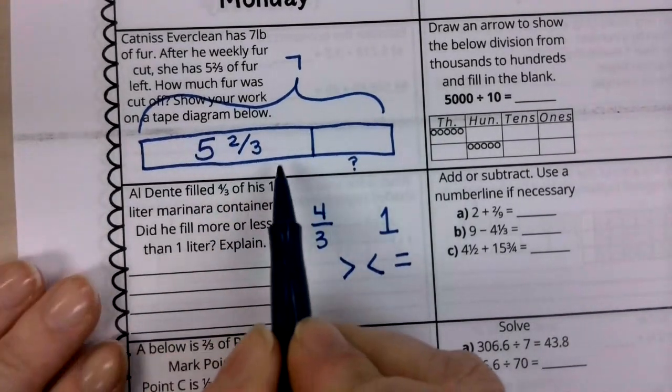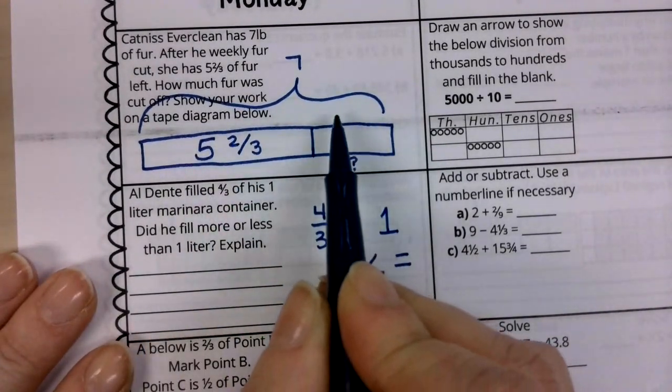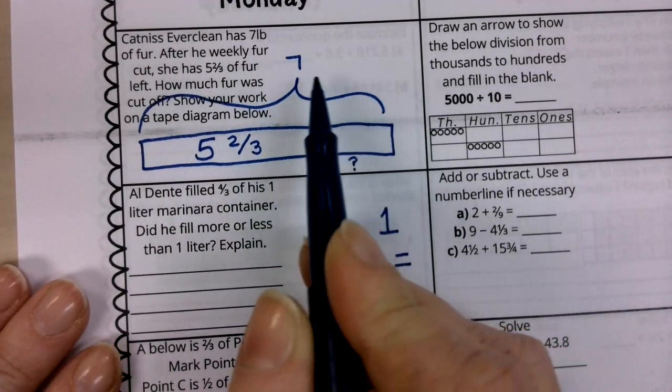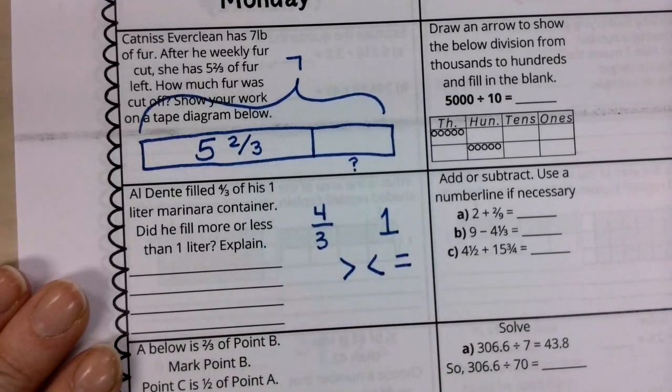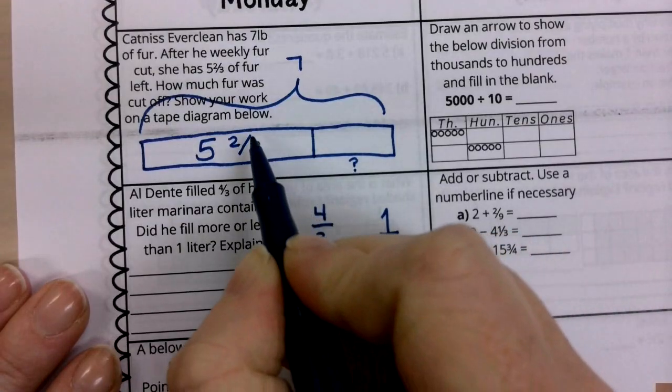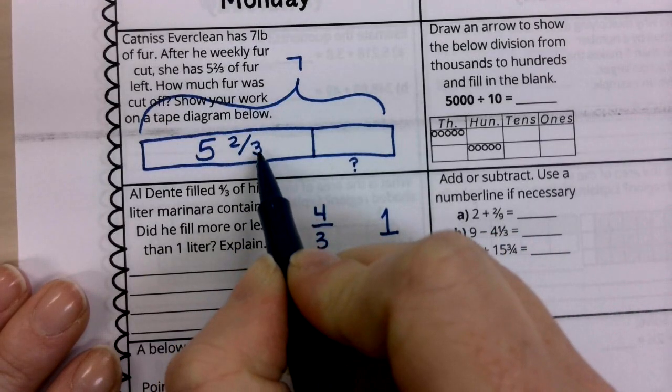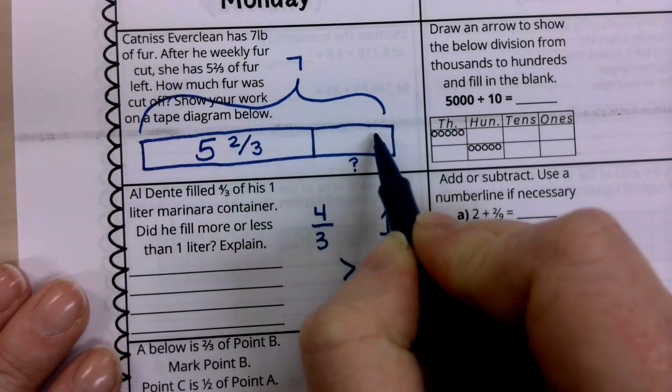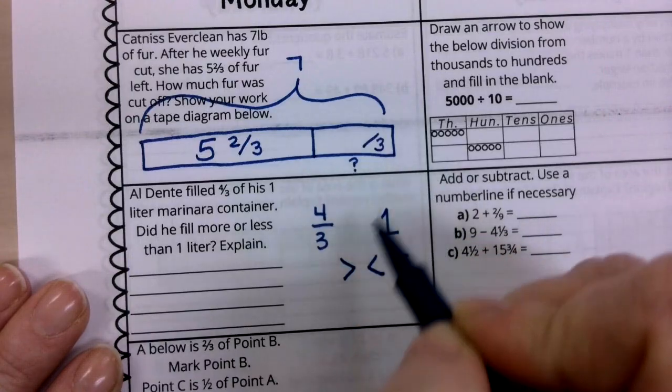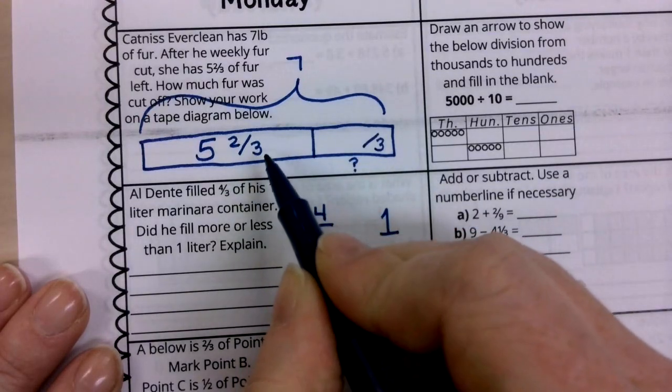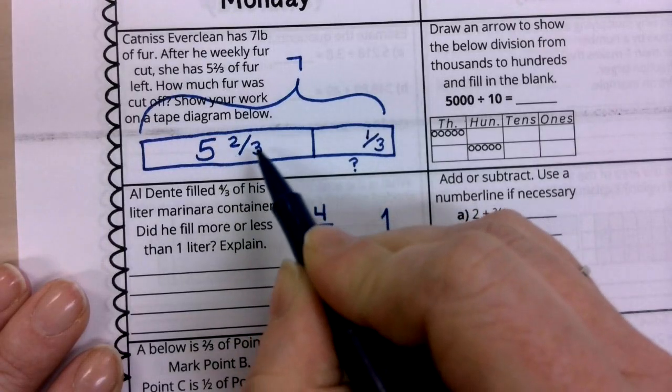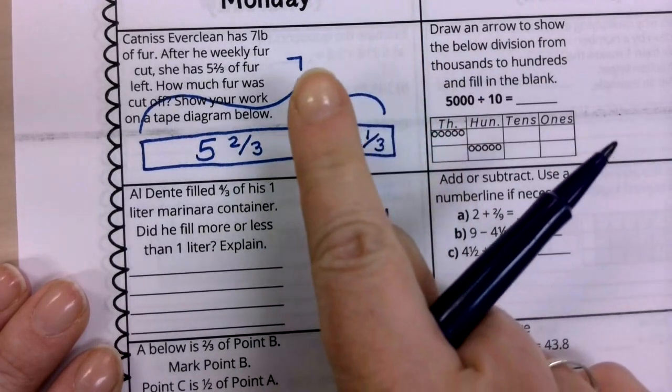So we want to know how much was cut off. Notice, boys and girls, this is how much is left. This is how much was cut off. We're trying to figure out this number, and it is going to all equal seven. We are looking for this missing part. So the first thing that we want to do is see if we can have two thirds, we want to know what fraction with a denominator of three would equal one whole. Well, I know that two thirds plus one third is going to equal three thirds. So this fraction and this fraction is going to equal one.